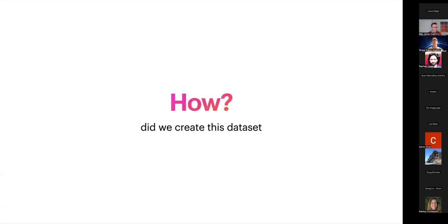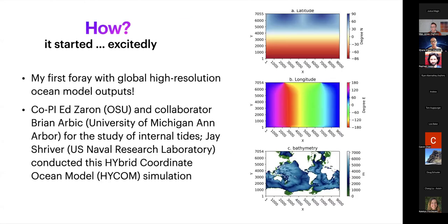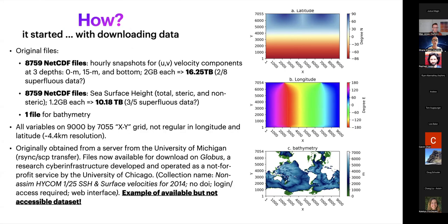How did we create this dataset? The model was run by Jay Shriver at the US Naval Research Laboratory with Brian Arbic from the University of Michigan. The dataset was originally available as 8,759 NetCDF files for velocity and about the same number for sea surface height, plus one file for bathymetry. Each individual NetCDF file was an hourly snapshot of the UV velocity components at the surface, at 50-meter depth, and at the bottom of the model—each file being two gigabytes. The total velocity files amounted to about 16.25 terabytes. Each NetCDF file also repeated latitude and longitude, making about two-eighths of the data superfluous. For sea surface height, we had 8,759 NetCDF files containing total, steric, and non-steric components plus latitude and longitude again, meaning about three-fifths of that data was superfluous. The total NetCDF sea surface height files were about 10 terabytes.